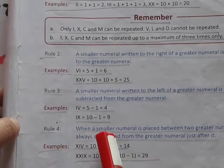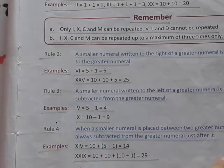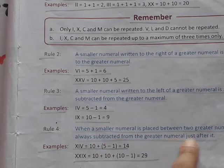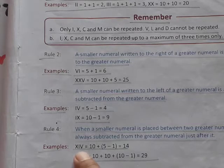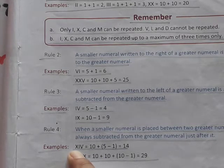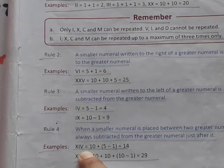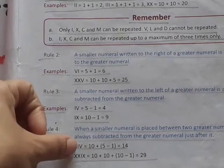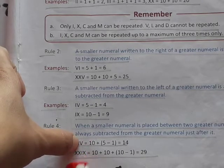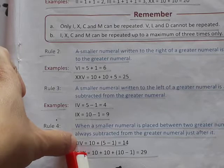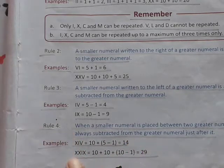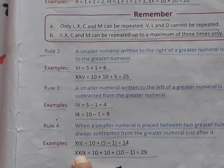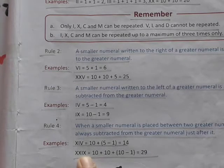The fourth rule is: when a smaller numeral is placed between two greater numerals, it is always subtracted from the numeral immediately after it. For example, XIV — X is 10, and IV means V minus I equals 5 minus 1 equals 4, so XIV equals 14. Another example: XXIX — XX is 20, and IX means 10 minus 1 equals 9, so XXIX equals 29.